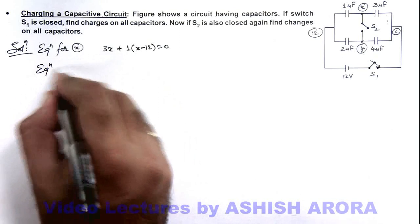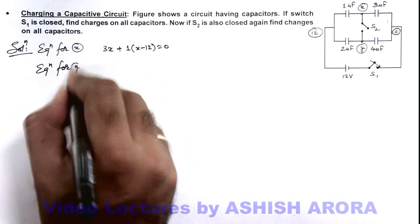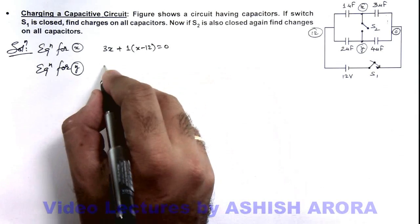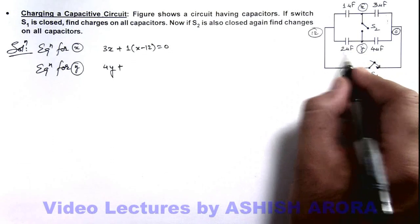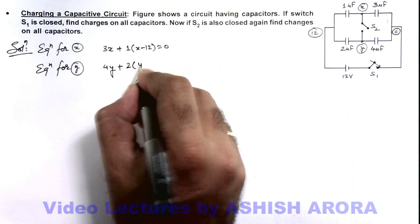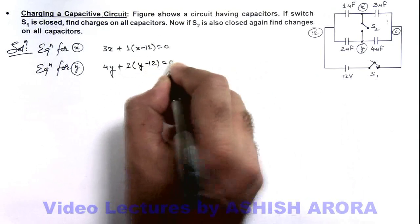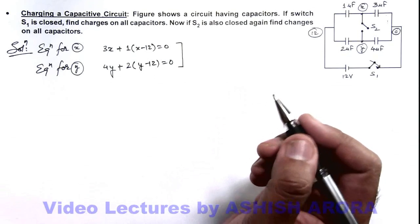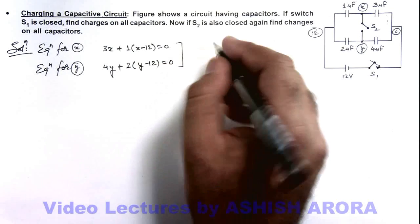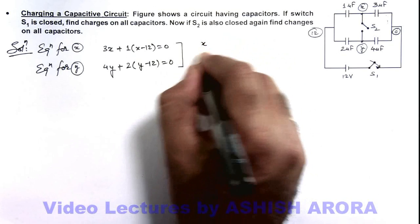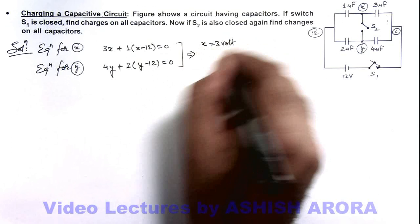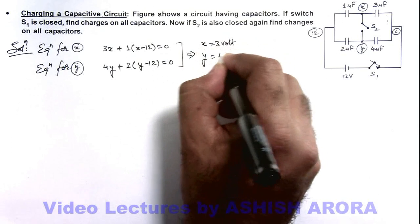And if we write the equation for y, here you can see y is connected with these two plates. So charge on this plate is 4y, plus charge on the right side of the plate of the 2 microfarad capacitor is 2 multiplied by y minus 12, and this should equal zero. By solving these two linear equations, you'll get x equals 3 volts and y equals 4 volts.